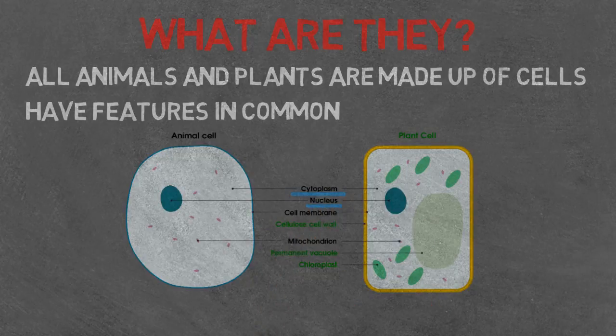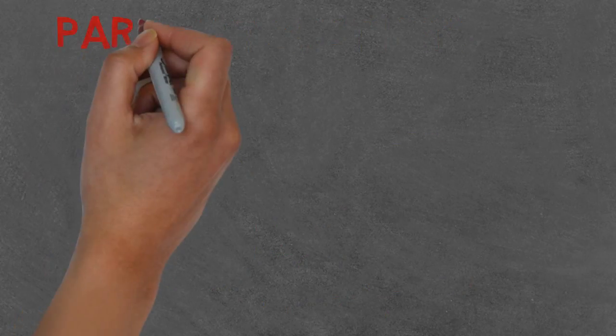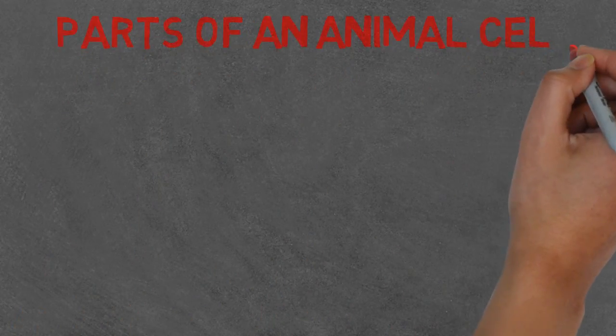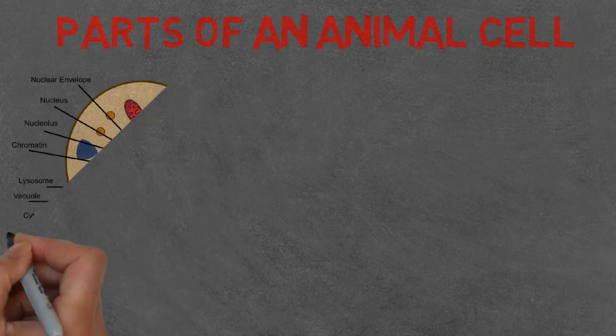The features that are most common are cytoplasm, nucleus, cell membrane, mitochondria, and ribosomes. Next, let's look at their individual structures starting with the animal cell.